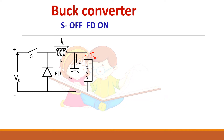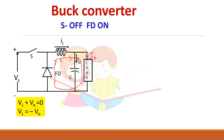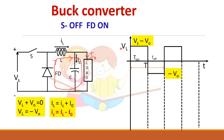Considering the off condition, the energy stored in the inductance is delivered to the load during the off period, and the current freewheels through the freewheeling diode. Writing the equation: VL plus V0 equals zero, so VL equals minus V0. The capacitor current equation is the same as before — IL is divided into IC and I0.